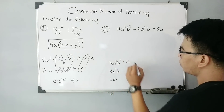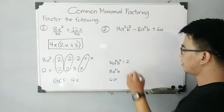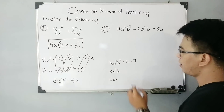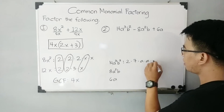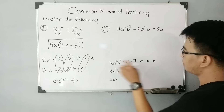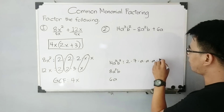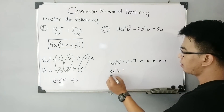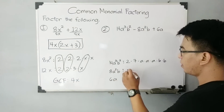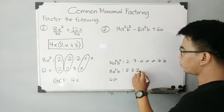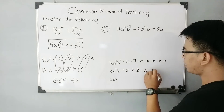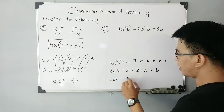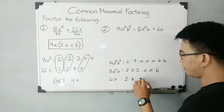For 14a cubed b squared, the prime factors are 2 times 7, and for the variables: a times a times a because we have a cubed, and b times b. For 8a squared b, the prime factors are 2 times 2 times 2, then a times a, then b. For 6a, that is 2 times 3, and then the variable a.